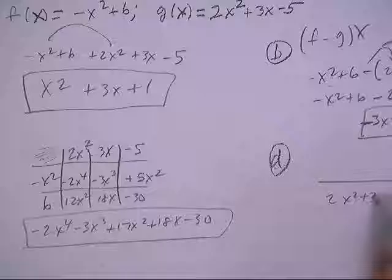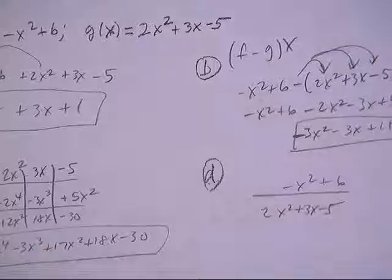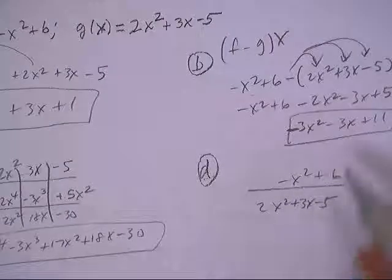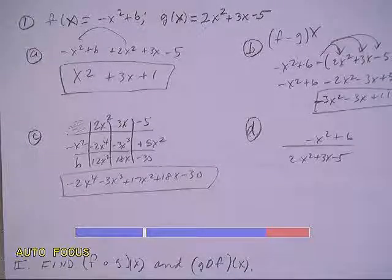Put G on the bottom, put X on the top. Nothing divides—you can't divide the x squared, you can't divide anything. Okay, so there's both C and D. We'll be back.